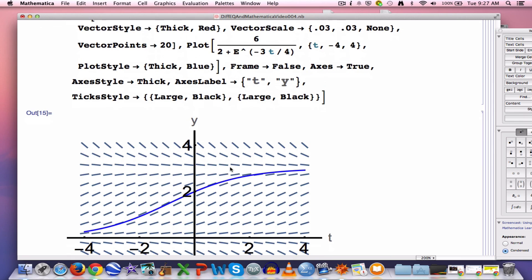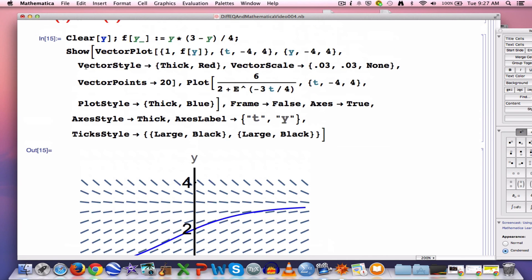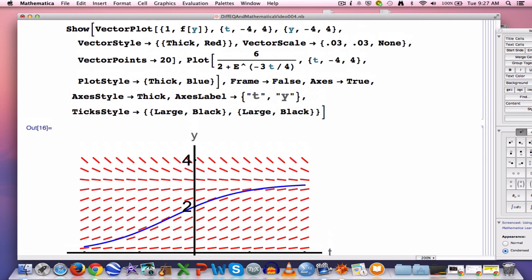I did notice that something happened here. I just recently downloaded the newest version of Mathematica. And in this newest version, with VectorStyle right here, it did not make my little slope marks thick and red like I wanted it to. However, if I put these in double curly braces, then it ended up working. And now those little slope marks are going to be thick and red. Okay, so that was evidently a change from the previous version of Mathematica.